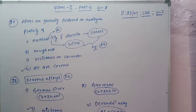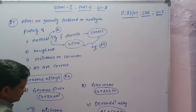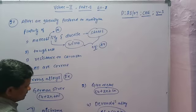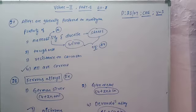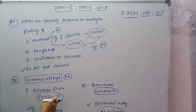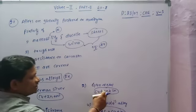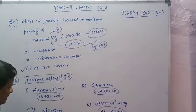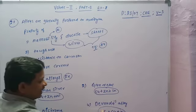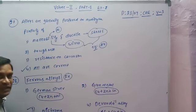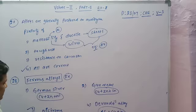Nichrome, composed of nickel, chromium, and iron, is used as a filament. To summarize: German silver is copper + zinc + nickel; gun metal is copper + zinc + tin; nichrome is nickel + chromium + iron; and duralumin is aluminium + copper + zinc.